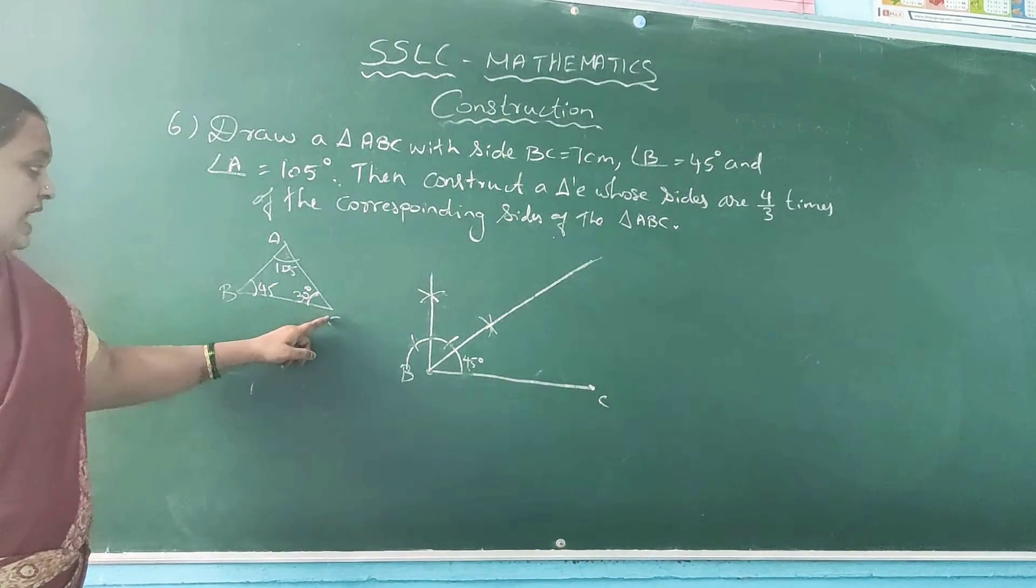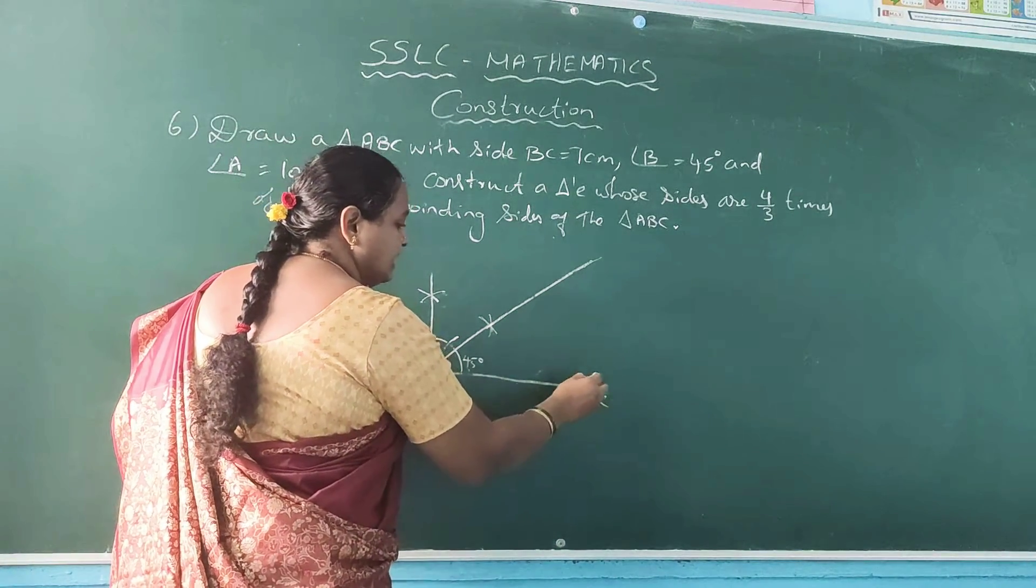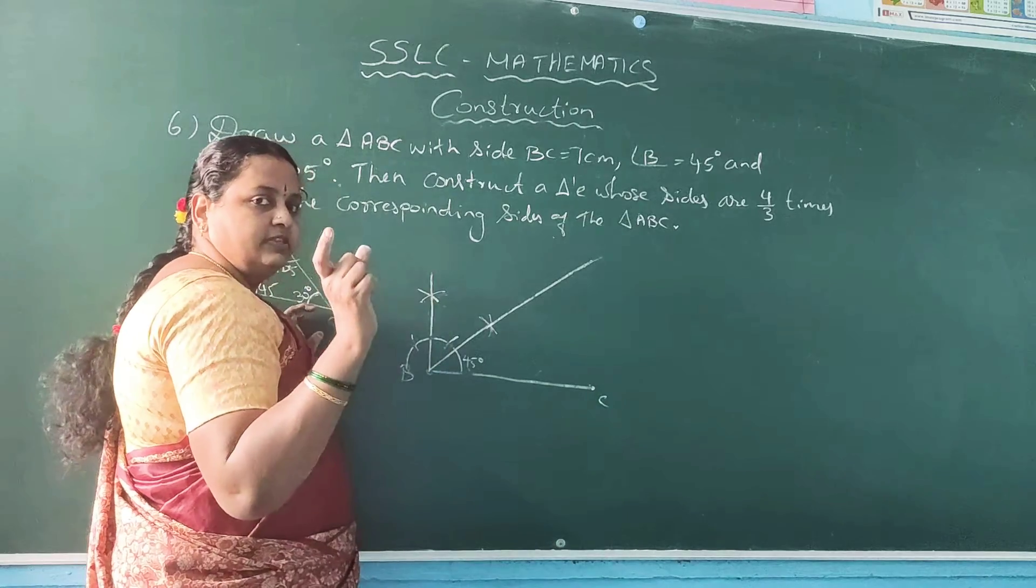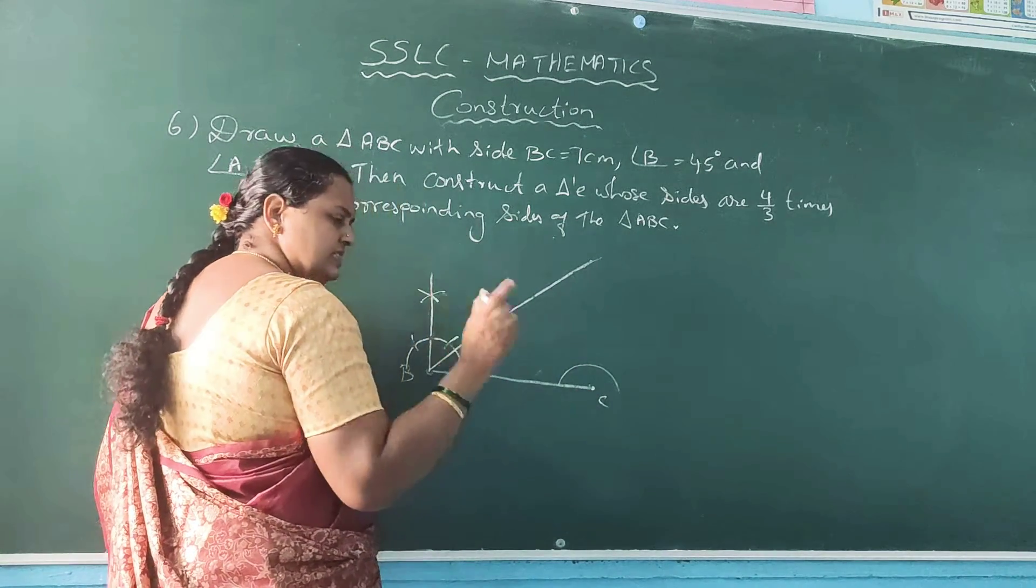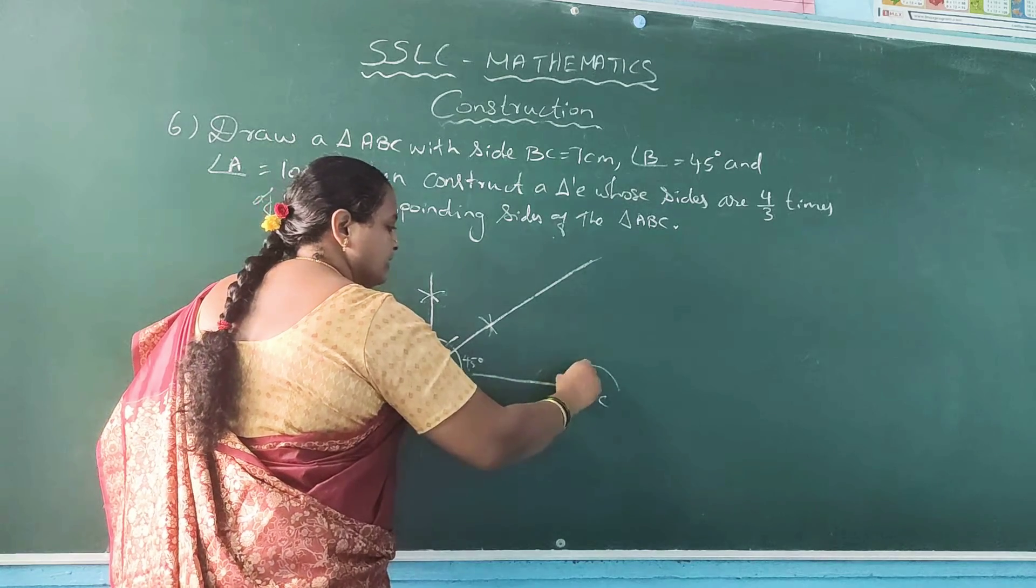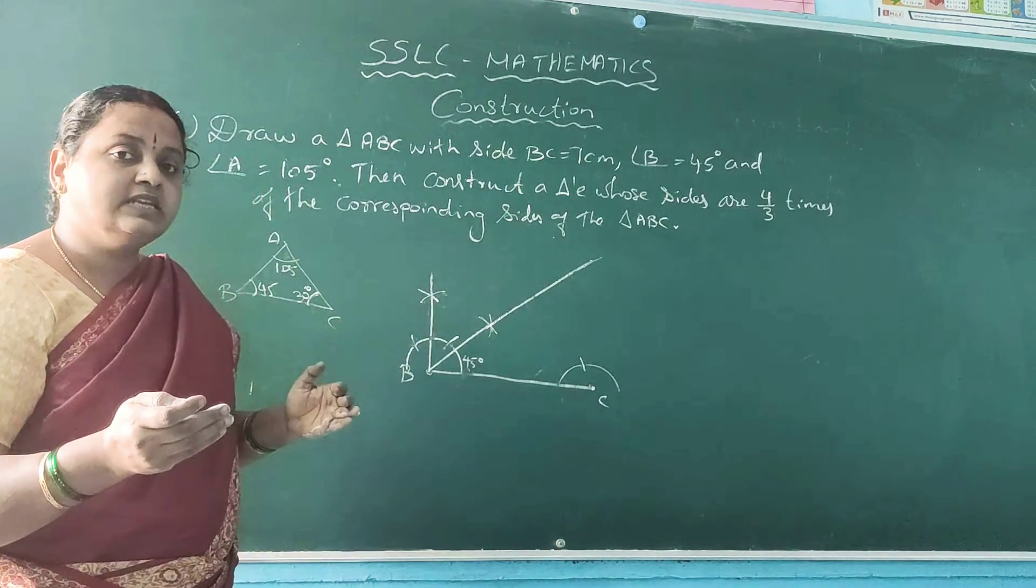So construct 30 degree here. How to construct? Suitable measurement, draw a semicircle. Same measurement, give a cut, that is for 60. Half of 60 is nothing but 30. That means we should bisect 60 degree.